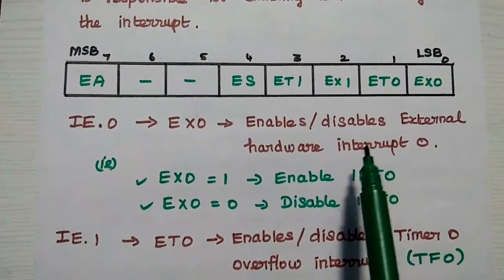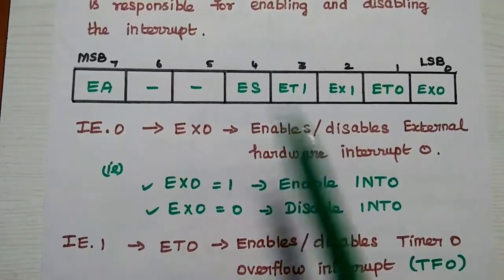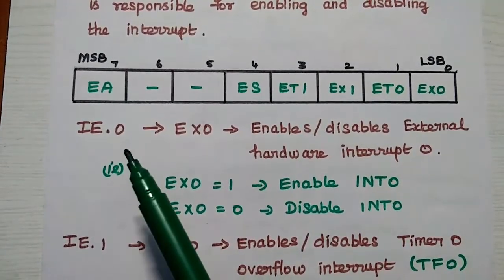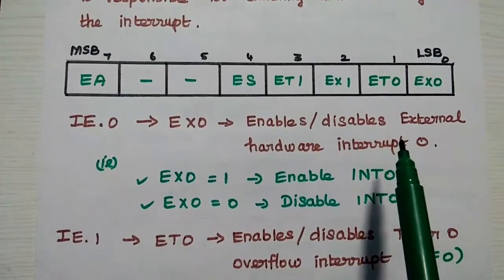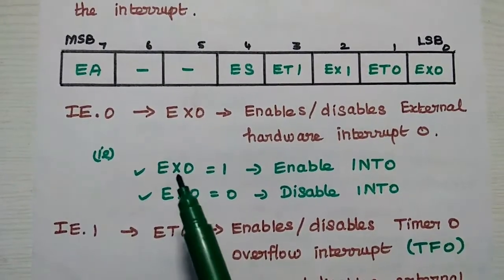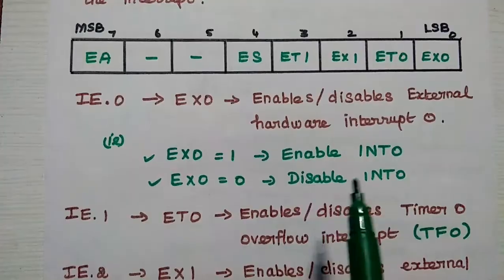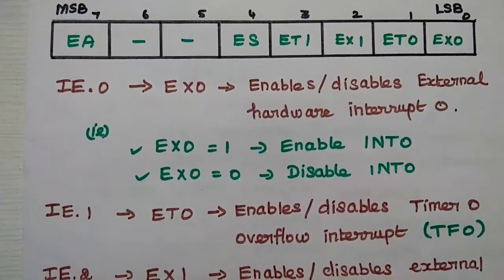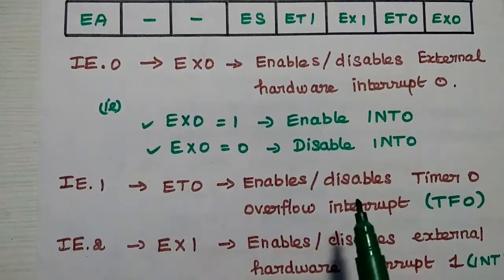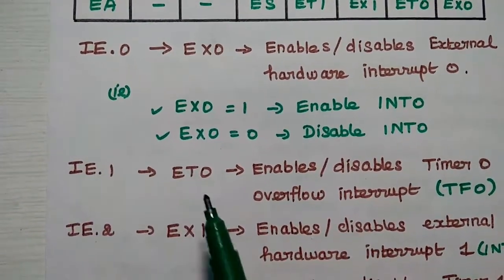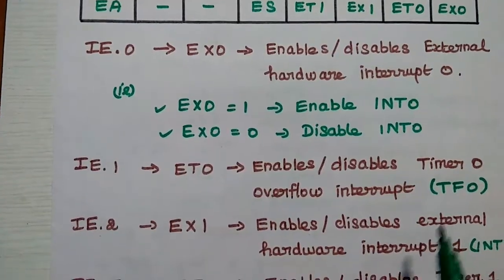Since the IE register is bit addressable, we can define each bit with its register name. The zeroth bit, represented as IE.0, is EX0. This bit is used to enable or disable external hardware interrupt 0. If this bit equals 1, it enables hardware interrupt 0. If it equals 0, it disables hardware interrupt 0. The next bit, IE.1, is ET0. This bit is used to enable or disable timer 0 overflow interrupt. If it equals 1, it enables the TF0 interrupt; if 0, it disables the TF0 interrupt.